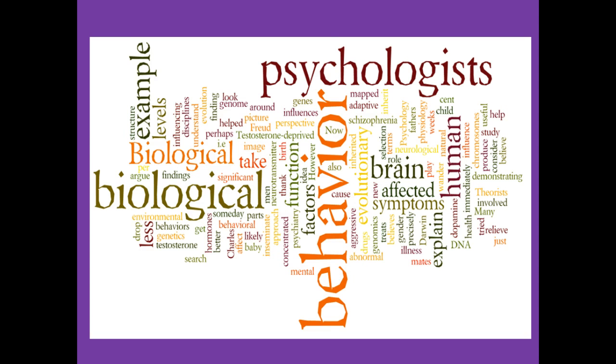Social psychology looks at how all these impact on our emotions and behaviour, even when the group is not present. Biological psychology aims to establish the biological basis of behaviour — body structures and functions, in particular brain processing, are investigated.